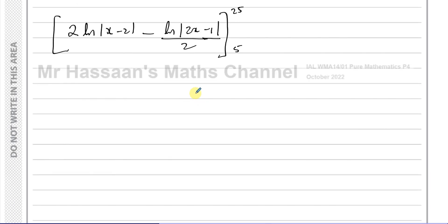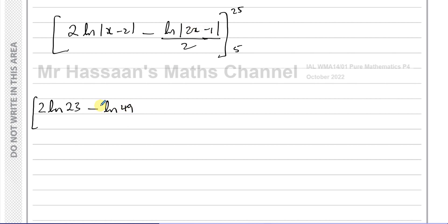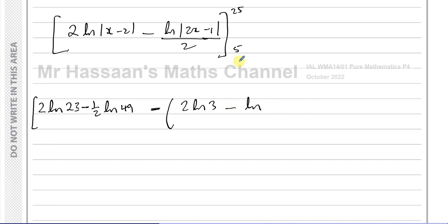Substituting x = 25: 2 ln(23) − (1/2)ln(49). Substituting x = 5: 2 ln(3) − (1/2)ln(9). The result is [2 ln(23) − (1/2)ln(49)] − [2 ln(3) − (1/2)ln(9)], giving 2 ln(23) − (1/2)ln(49) − 2 ln(3) + (1/2)ln(9).